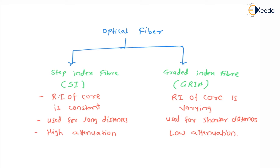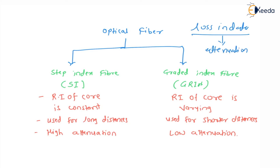Attenuation means the loss of data. Whenever we transmit a signal in the form of light waves, there is actually some loss of data. That loss is called attenuation — it tells us exactly how much data has been lost during the transmission.